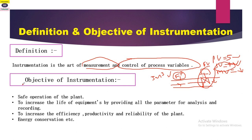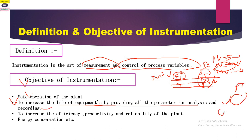This is the definition of measurement and control of process variables, which is called instrumentation. Now the next point is the objectives of instrumentation. The first objective is safe operation of the plant — if any disturbance or emergency occurs, the instrumentation system acts as a safety system. The second objective is to increase the life of equipment by providing all parameters for analysis and recording. For example, on a compressor, a vibration transmitter (VT) is installed for vibration monitoring.